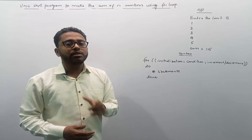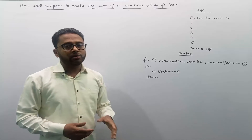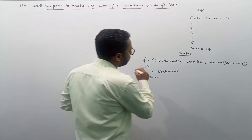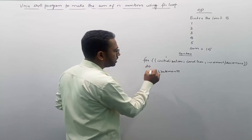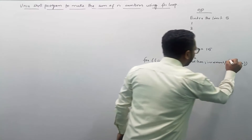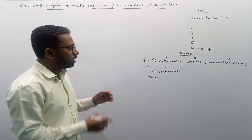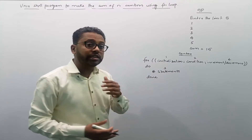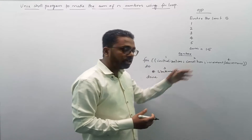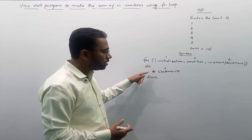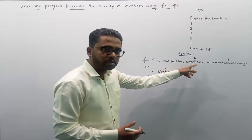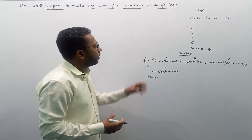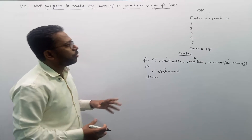I'm going to do this program using a for loop, and the syntax is already written on the board. A for loop has four parts: initialization, condition, statements, and then increment or decrement. Initially the initialization executes, then the condition is checked, then the statements inside the for execute only if the condition is true, then increment or decrement is performed.